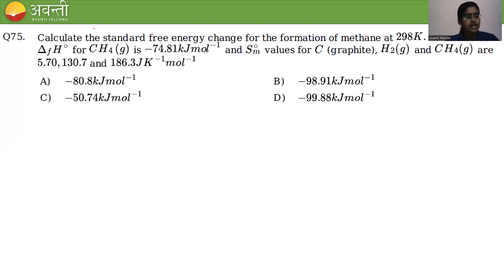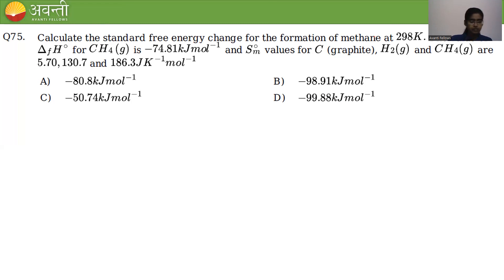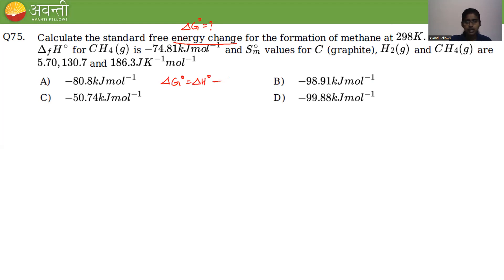Question 75: calculate the standard Gibbs free energy change for the formation of methane at 298 K, given ΔH°f(CH₄) and standard molar entropies. The formula is ΔG° = ΔH° − TΔS°.